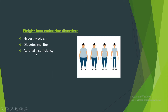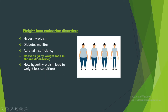Now, the reasons how these disorders lead to weight loss. First, hyperthyroidism: thyroid hormone is present in more than its normal value in blood. The function of thyroid is to enhance the metabolism rate. Increased metabolism rate means more energy is utilized, burning the energy stored in the form of fats. With no fats remaining, this leads to weight loss.